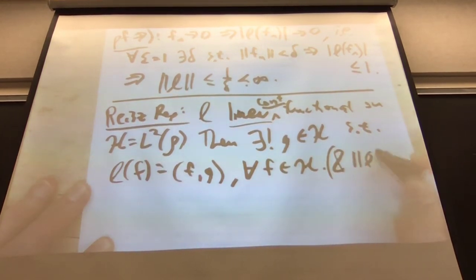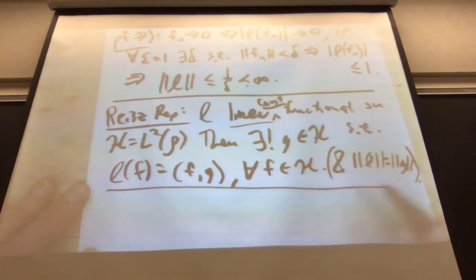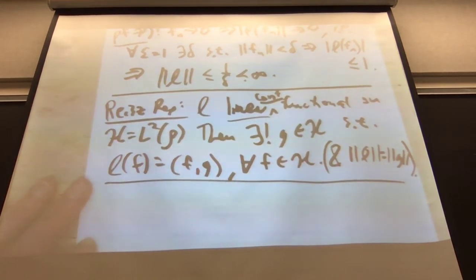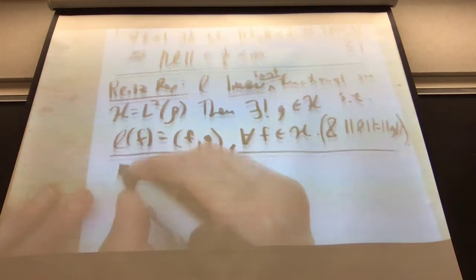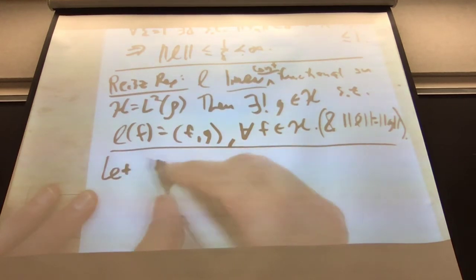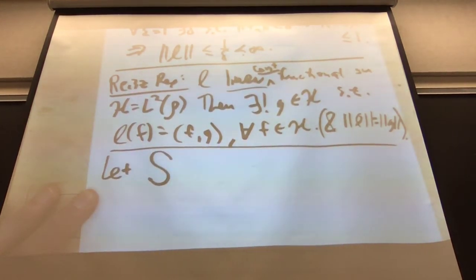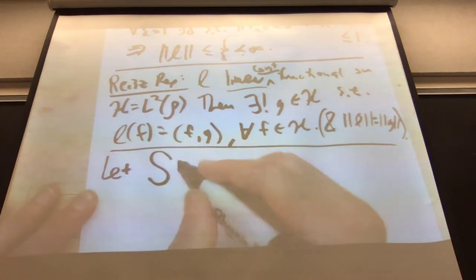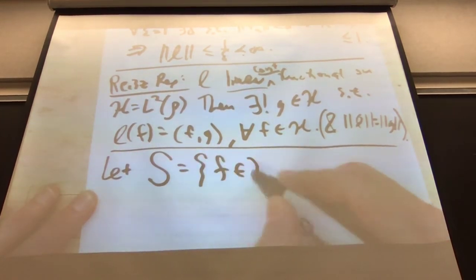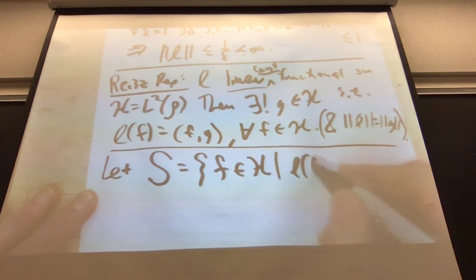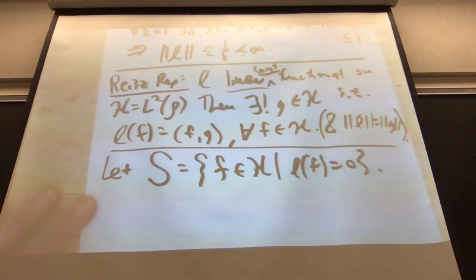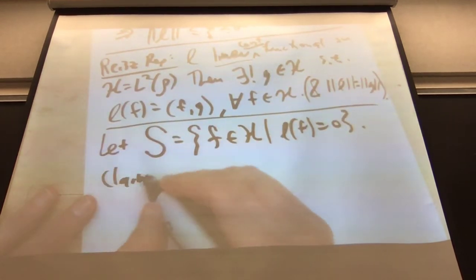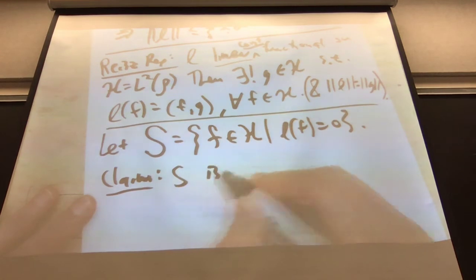And hence the L2 norm of G equals the operator norm of L. Before we prove this, let's talk about closed subspaces. The first step in this proof is to study a certain subspace and see that it's closed. Let's look at the kernel, the null space of L: this is the set of F in H such that L(F) equals zero. My claim is this is closed.